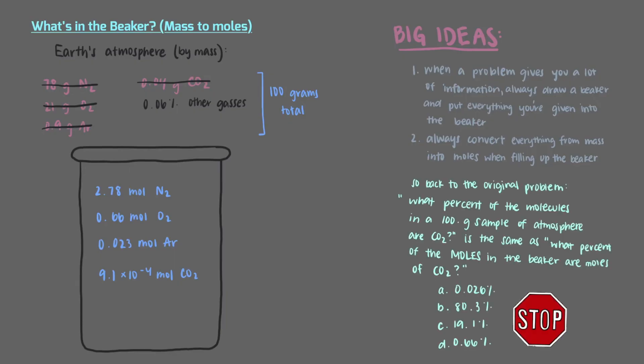So let's go back to the original problem. What percent of the molecules in a 100 gram sample of the atmosphere are carbon dioxide is really the same question as what percent of the moles in the beaker are moles of carbon dioxide. Wow, we finally did it! To find the percent of molecules that are carbon dioxide in our sample, we divide the number of moles of carbon dioxide by the total number of moles. By doing so, we get that 0.026% of the molecules in the sample are carbon dioxide.